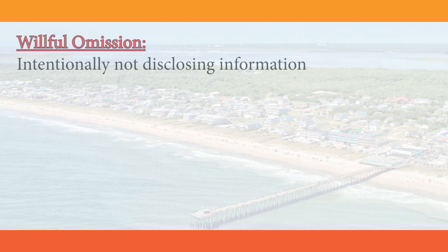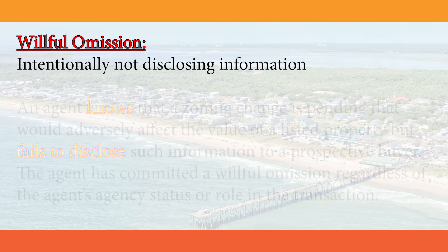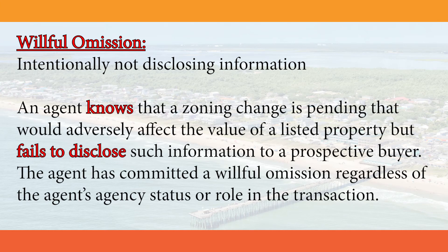Willful omission: intentionally not disclosing information. For example, an agent knows that a zoning change is pending that would adversely affect the value of a listed property but fails to disclose such information to a prospective buyer. The agent has committed a willful omission regardless of the agent's agency status or role in the transaction.